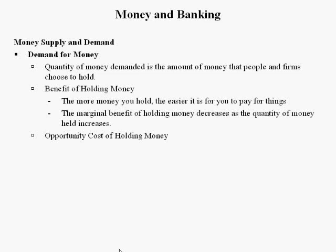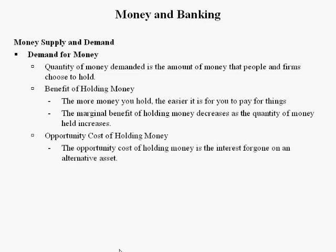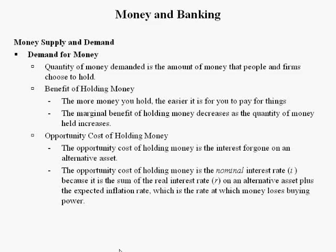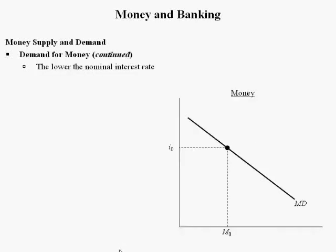There's also an opportunity cost of holding money, which is the interest foregone on an alternative asset. The opportunity cost of holding money is the nominal interest rate, because it is the sum of the interest rate on an alternative asset plus the expected inflation rate — the rate at which money loses buying power. Rather than holding money in your wallet, you could have kept it in a bank earning interest. The demand for money is the relationship between the quantity of money demanded and the nominal interest rate, holding everything else constant. The lower the nominal interest rate, the lower the opportunity cost of holding money.